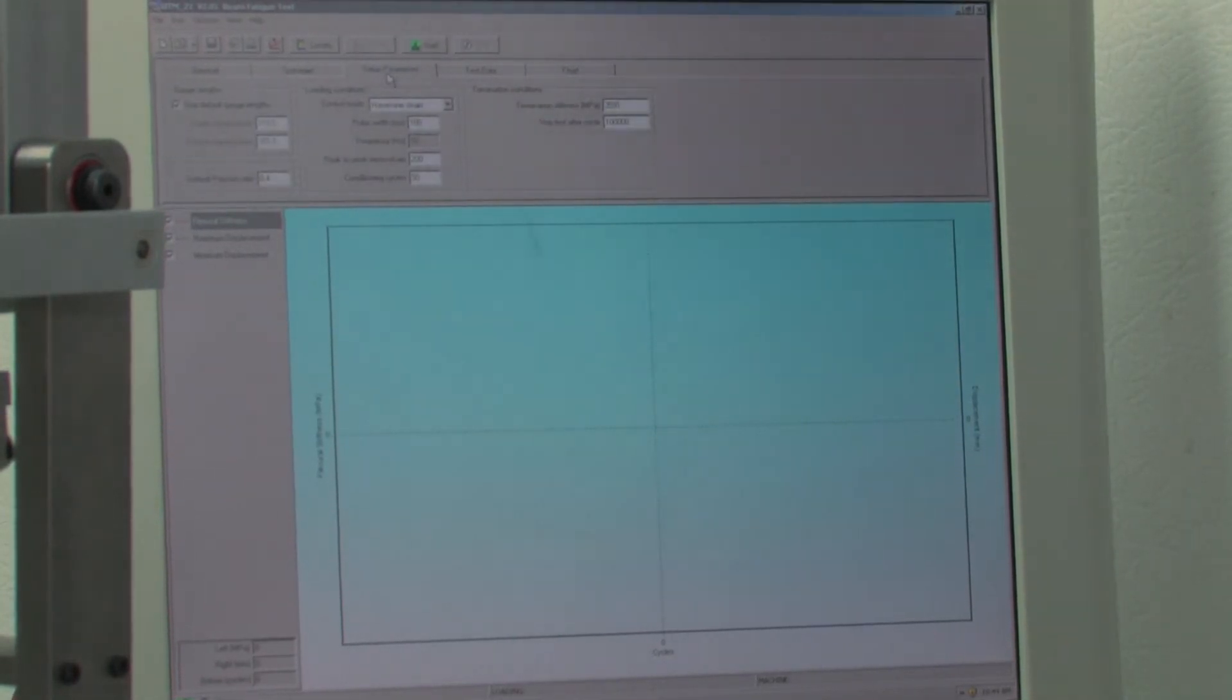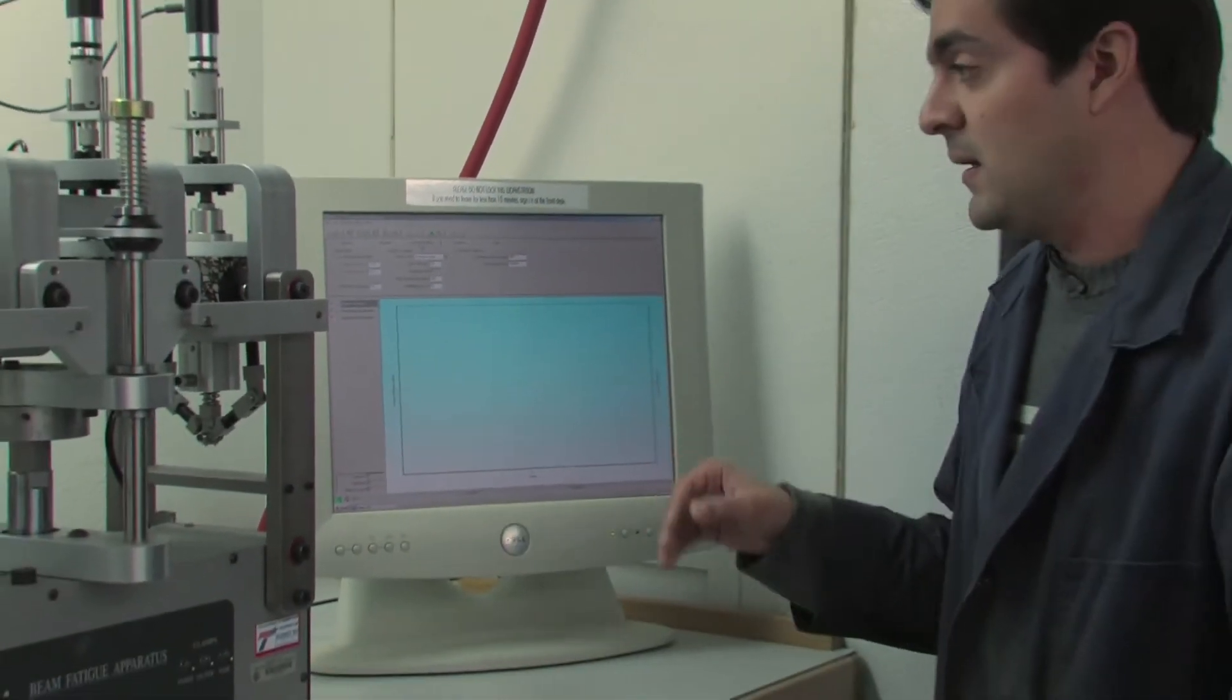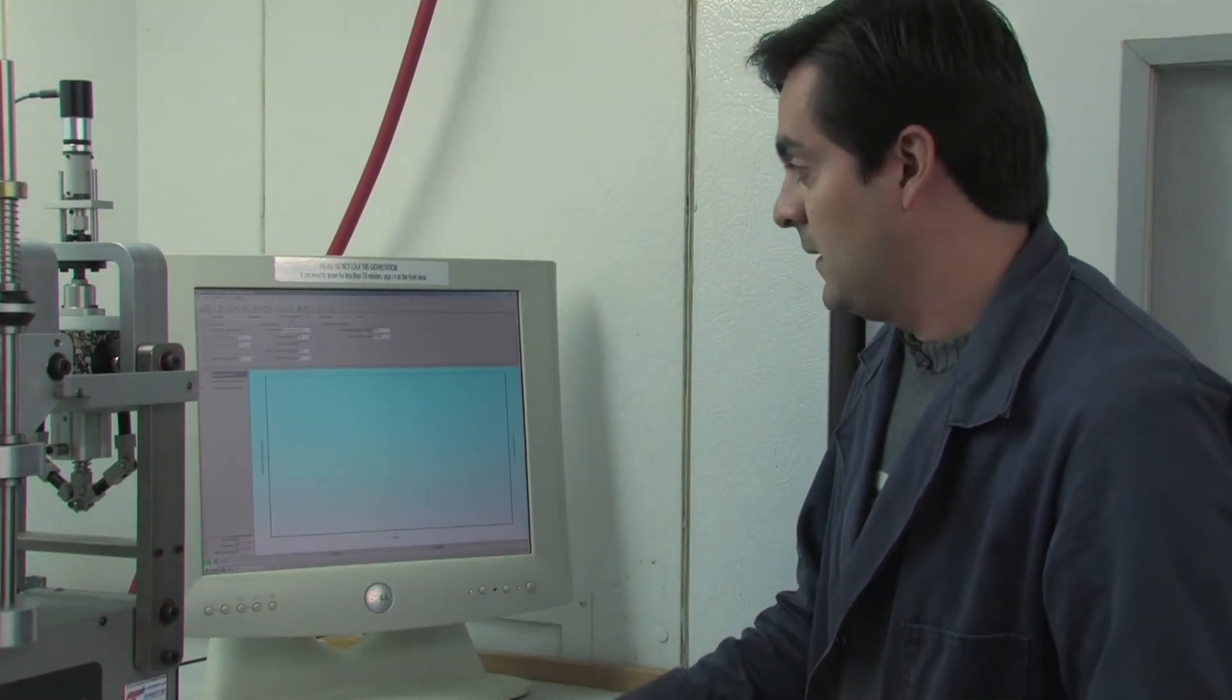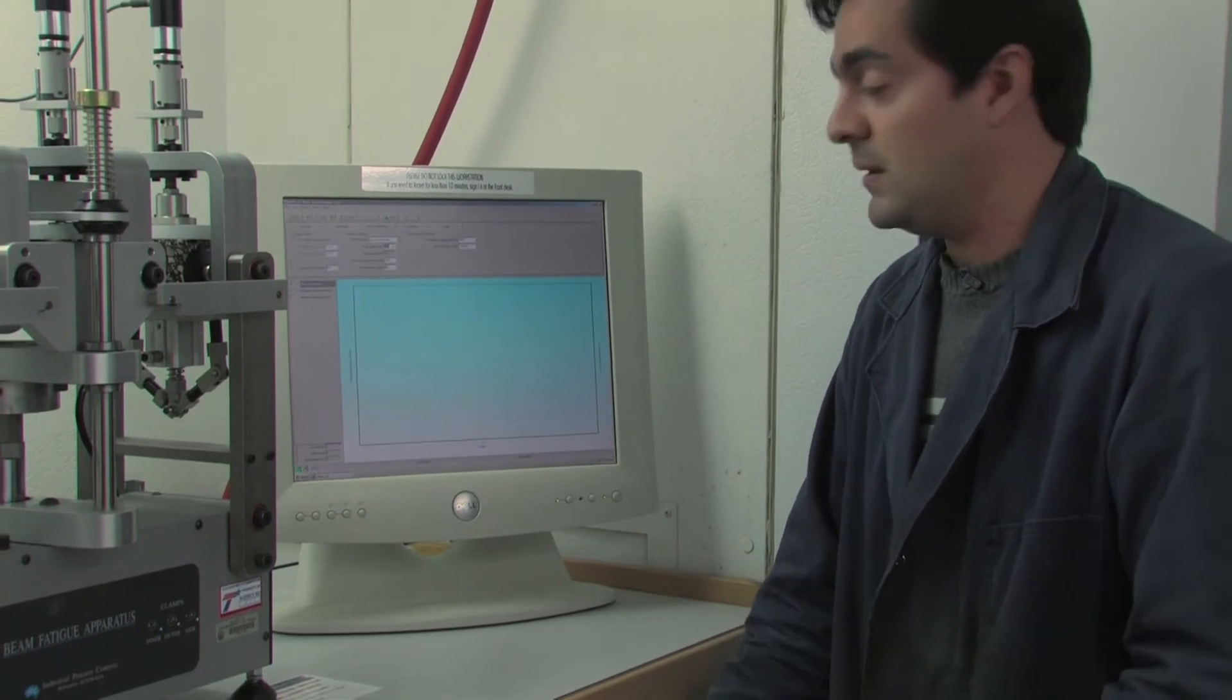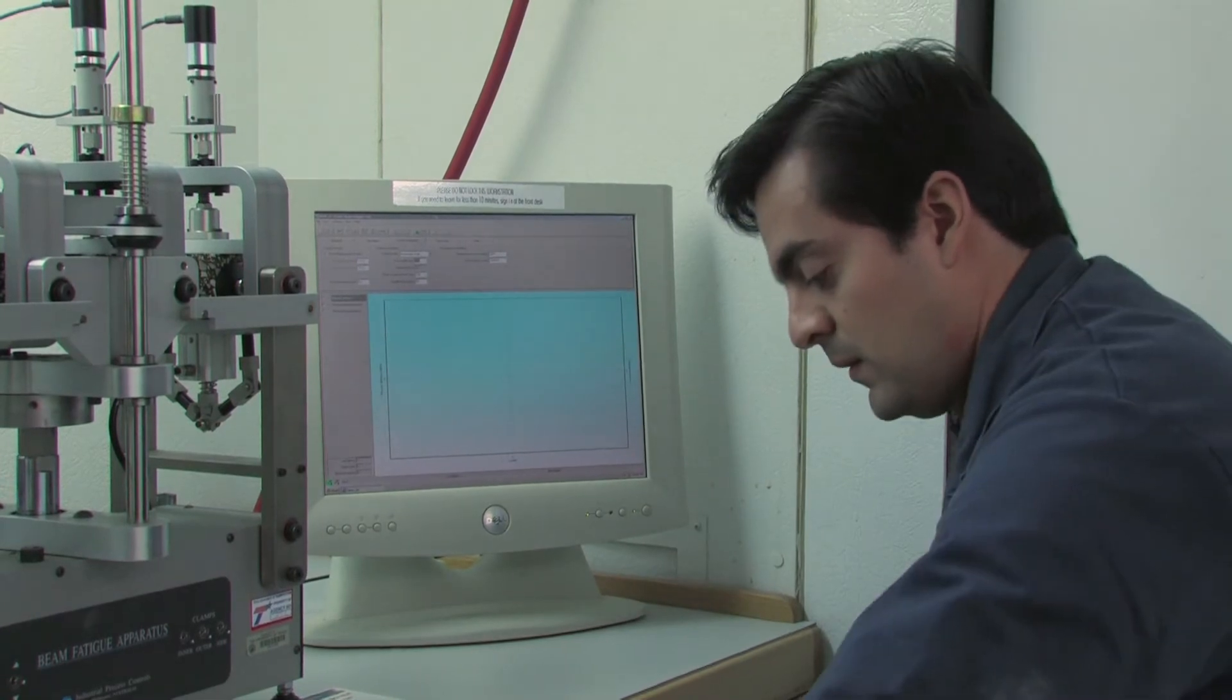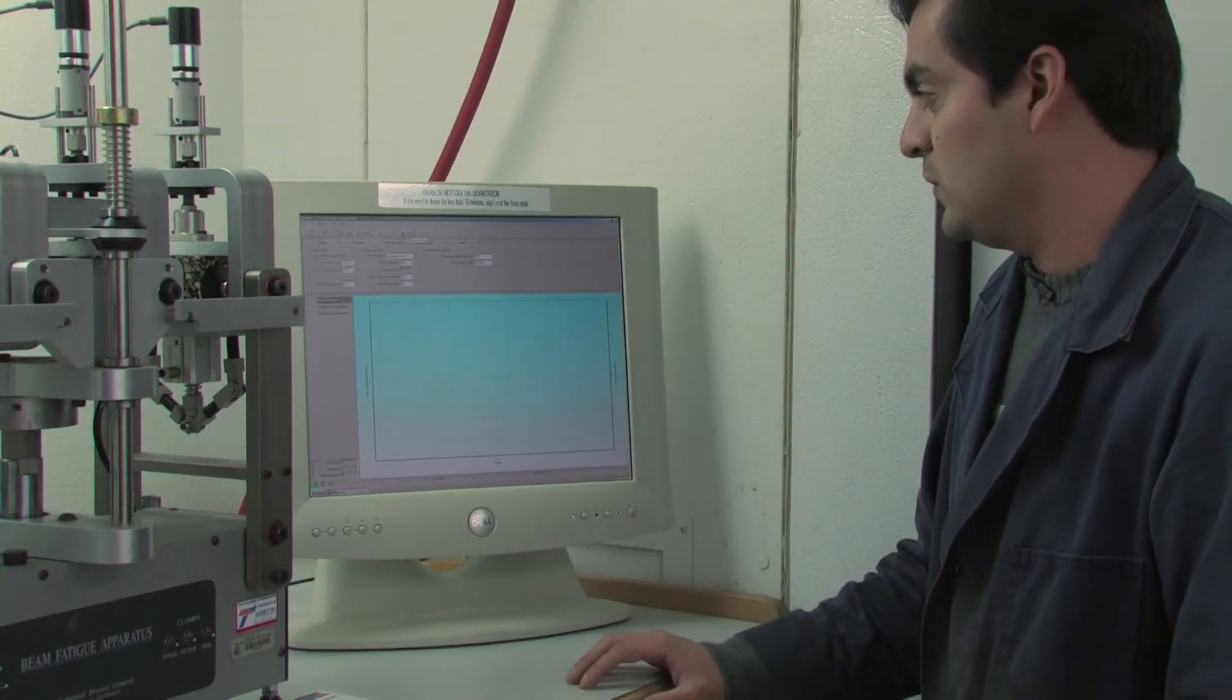On the third tab is where we enter the type of load that we're going to apply. Usually the specification talks about the haversine strain control test, but we can also apply a stress control test when using sinusoidal waves. Normally we select a frequency of 10 hertz, that is how it's on the specification, but the software allows us to change this. For example, we can go at a higher frequency or at a lower frequency, but the 10 is how we usually run it.